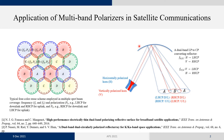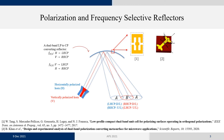Now that we know what functionality we expect from this reflector, we can microscopically design its constituent elements. These constituent elements are usually unit cells or scatterers that are asymmetric in the horizontal and vertical directions, so they can treat the electromagnetic waves aligned horizontally or vertically differently. It is worth noting that these unit cells are backed by a ground plane, so they work in complete reflection mode.